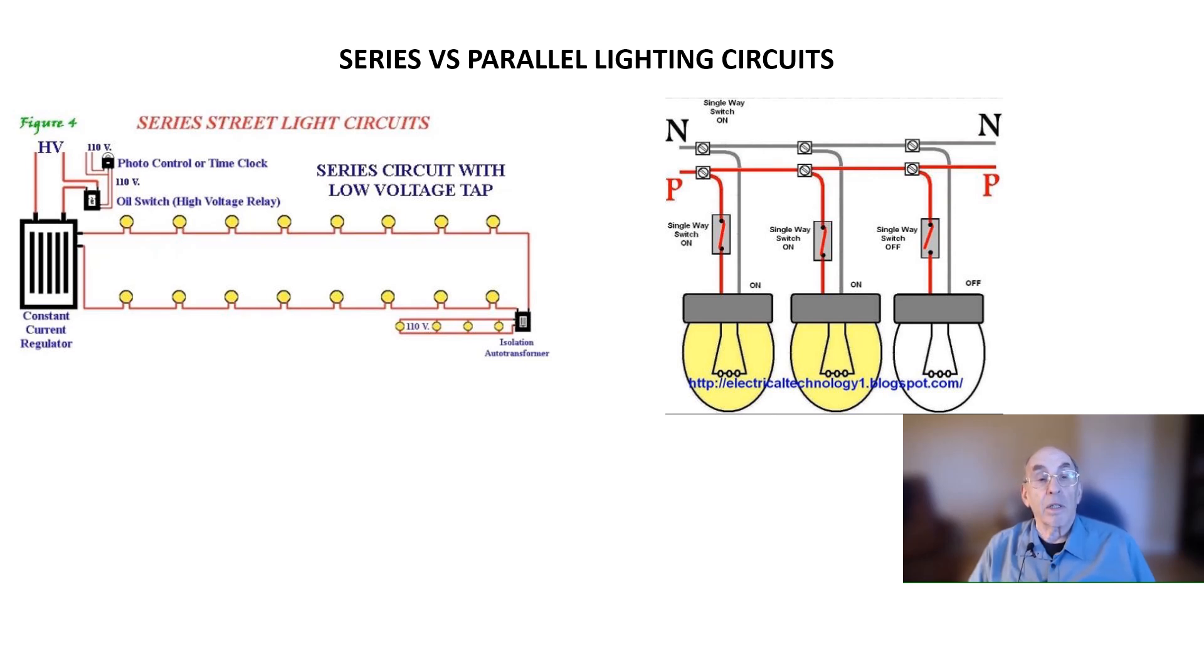The series streetlight system was originally designed to power carbon arc lamps before the invention of incandescent bulbs. Following the invention of incandescent lamps in the early 20th century, the arc lamps were replaced by incandescent lamps. The regulated output transformers worked very well to power these strings of incandescent bulbs.